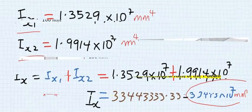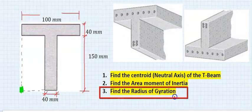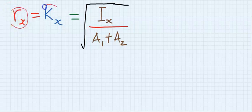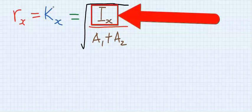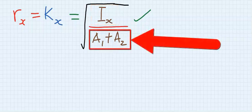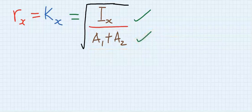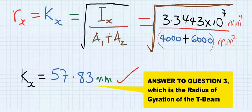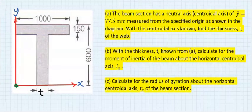To complete the question, we find the radius of gyration. The radius of gyration can be represented in two ways, and the formula uses the total area moment of inertia divided by the total area of the T-beam. Substituting and solving carefully, we obtain our final result. In the next video, we will use a given area moment of inertia to find the thickness of a beam and then calculate the area moment of inertia and the radius of gyration.